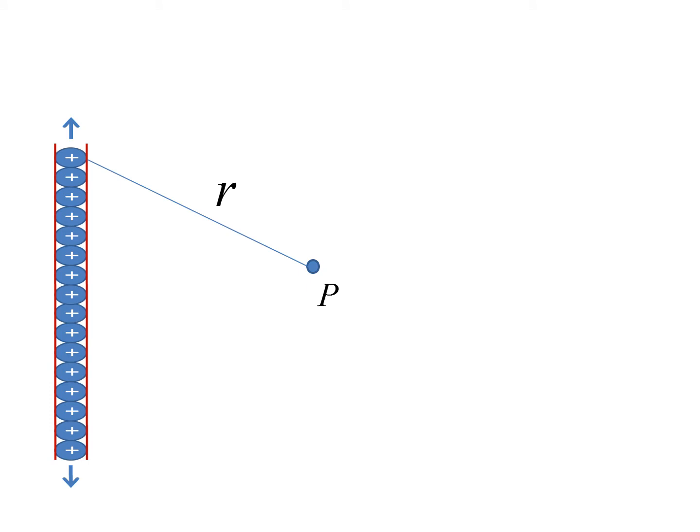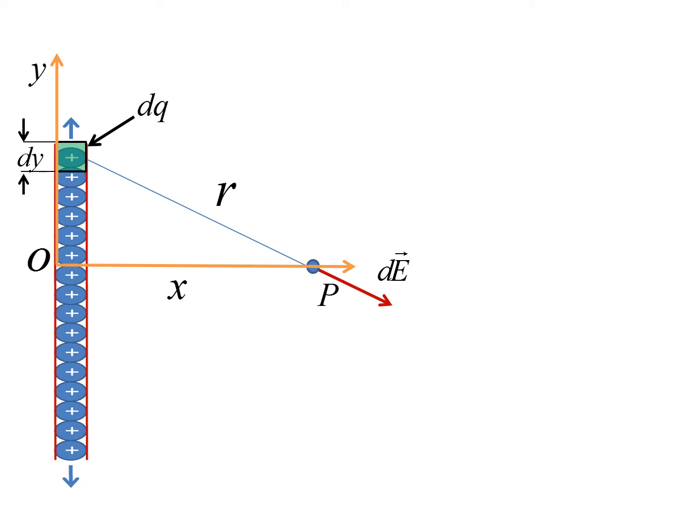First, we define the radial direction from the top point charge shown to point P, and consider what the electric field does due to just this one point charge. We call that dE — an infinitesimally small portion of the electric field of the entire wire. We then set up an axis system with X going through point P and the Y axis going along the length of the wire. We can break the wire into small segments dY, each containing one individual point charge.